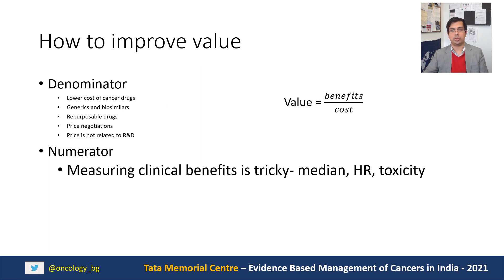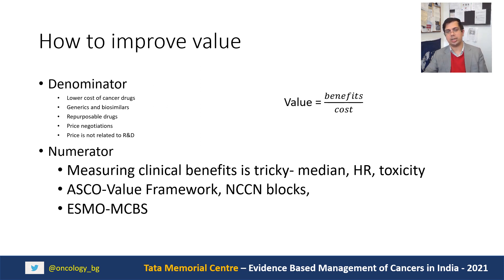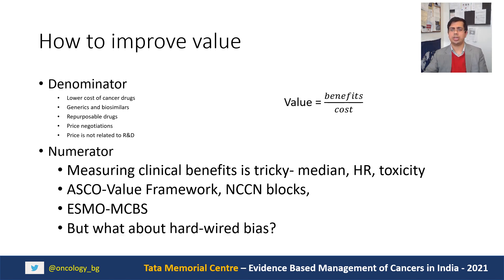We need to consider whether to look at median survival gains, hazard ratios, and toxicity. Organizations like ASCO, NCCN, and ESMO have come up with value tools — more accurately, clinical benefit assessment tools — to help guide these decisions. But what about bias inherent in the trials? Let's discuss those issues.